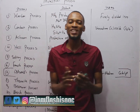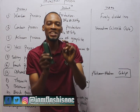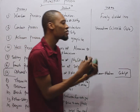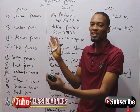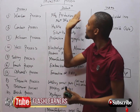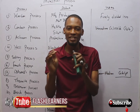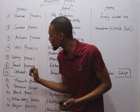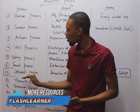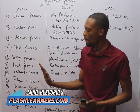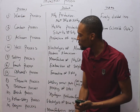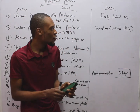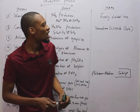Welcome to chemistry class with Flash Isaac. Today I shall be taking you through industrial processes. Industrial processes refer to the various steps you need to follow to manufacture certain products. The industrial processes we shall be talking about today are: Haber process, Contact process, Acheson process, Hall process, Solvay process, Frasch process, Ostwald process, Thermite process, Bessemer process, Bosch process, Chlor-alkali process, and Bergius process.